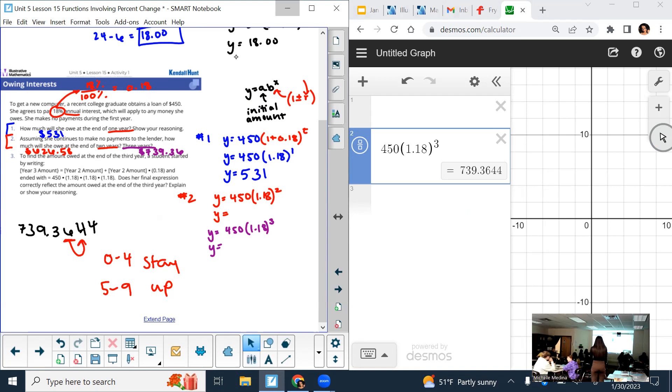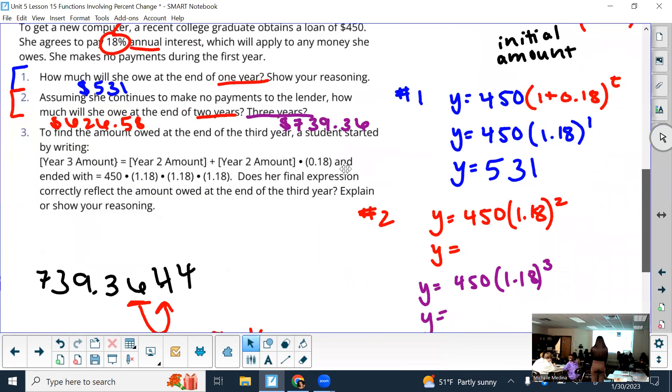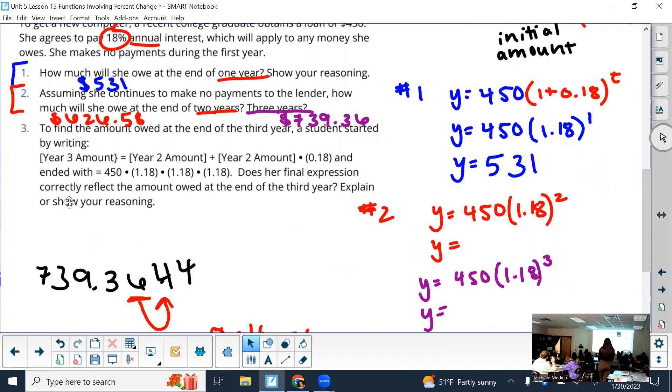All right. To find the amount owed at the end of the third year, or sorry, let me read this real quick. A student started writing this. Does her final expression correctly reflect the amount owed at the end of the third year? So, is this what I'm about to highlight the same as what we did for year three? Oh, no. Raise your hand if you think yes. Raise your hand if you think no. So, I would say that what she highlighted is correct. Because what do exponents tell you to do? Multiply the base by itself that many times. So, if I expand that 1.18 to the third power, I would have it there three times. And I would still get the same answer if you want to double check that. All right. Questions on what we've done so far?